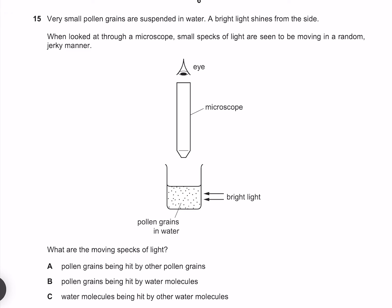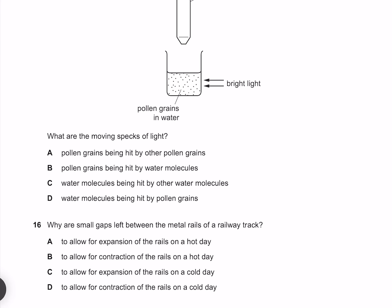Very small pollen grains are suspended in water. A bright light shines from the side. When looked at through a microscope, small specks of light are seen to be moving in a random jerky manner. What are the moving specks of light? Our moving specks of light are our pollen grains reflecting our bright light. The reason they're moving is because they're being hit by water molecules, not by other pollen grains. Therefore our answer is B.